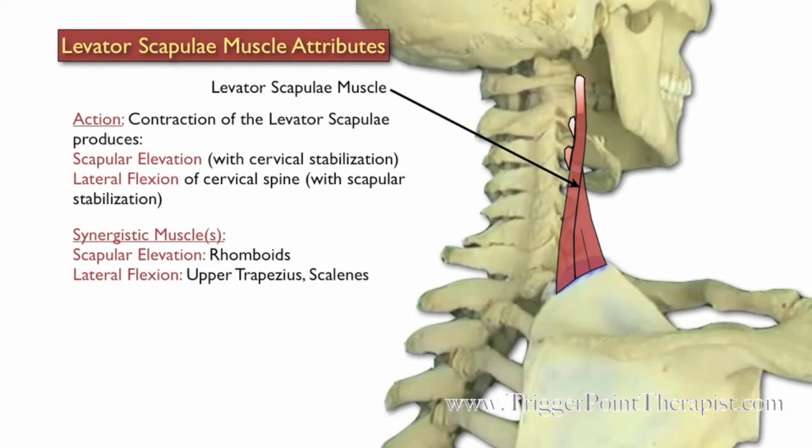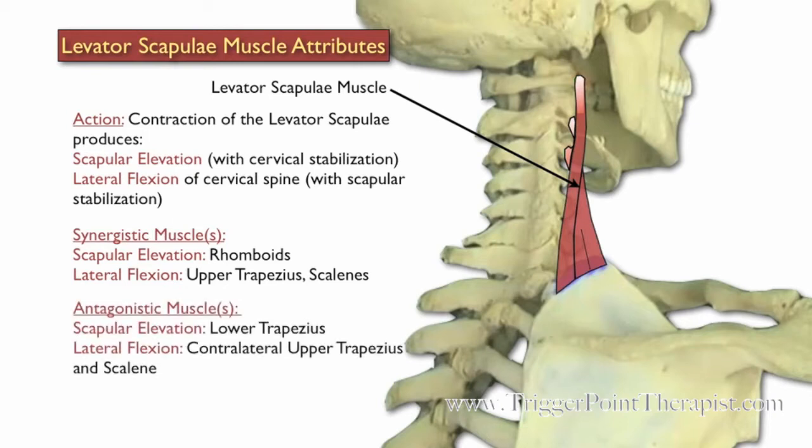The rhomboids are synergistic during scapular elevation, whereas the upper trapezius and scalenes are synergistic during lateral flexion. The lower trapezius is antagonistic during scapular elevation, and the contralateral upper trapezius and scalene are antagonistic during lateral flexion.